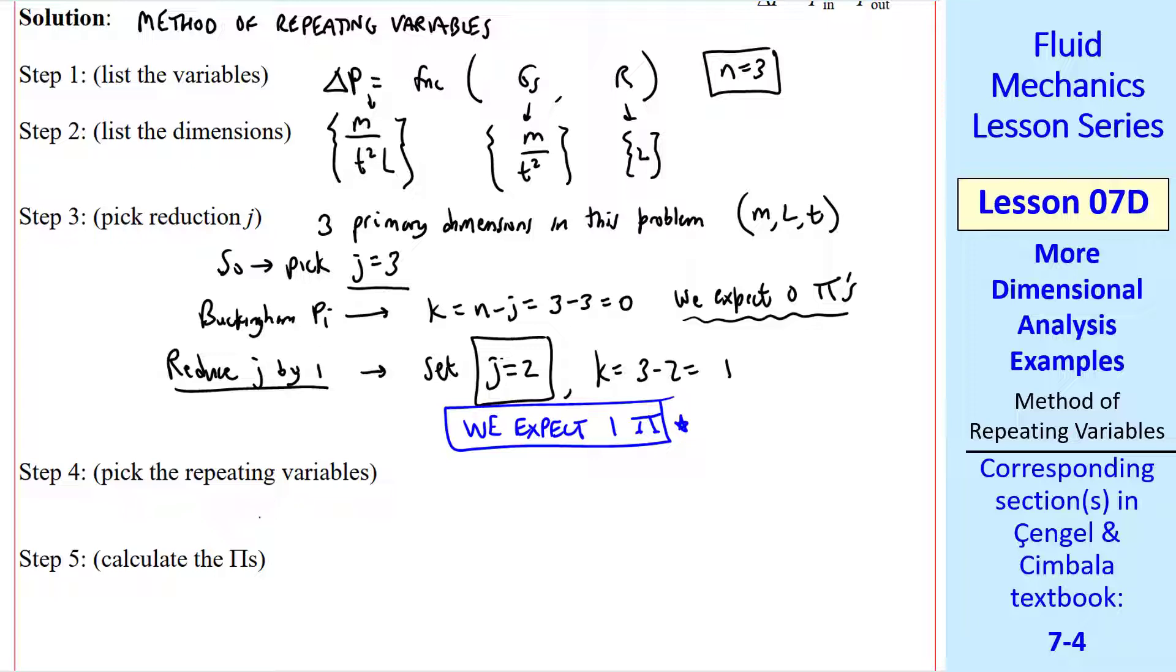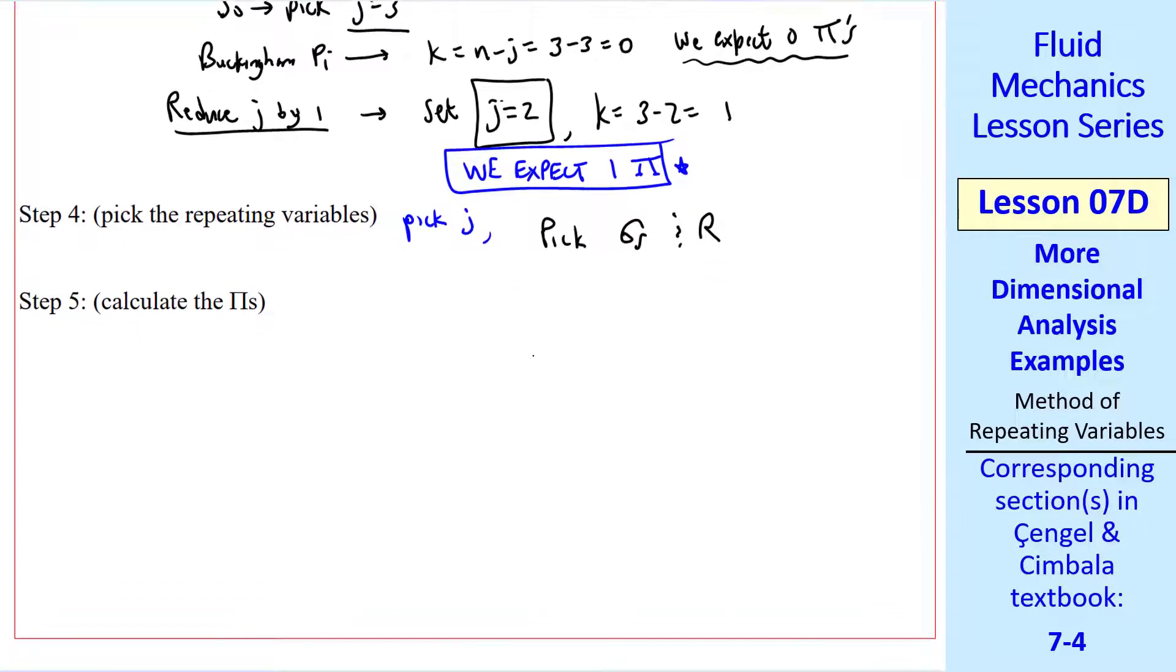Step 4 is to pick the repeating variables. We pick j of them, where j is 2. Which two should we pick? Remember our rules. We can't pick delta p because it's the dependent variable. So we're left with these two. So we really have no choice. We pick surface tension and radius.